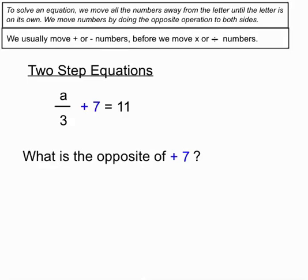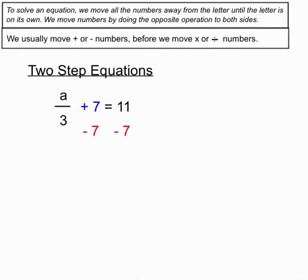How do we move a plus 7? We want to do the opposite of a plus 7, which is a minus 7. So we're going to subtract 7 both sides. On that left-hand side, a plus 7 and a minus 7 will cancel each other out, leaving us with just that a over 3. Then we have 11 on the right-hand side, take away 7, leaving us with 4. So that's our first step. We've moved the plus 7 by doing the opposite to both sides.